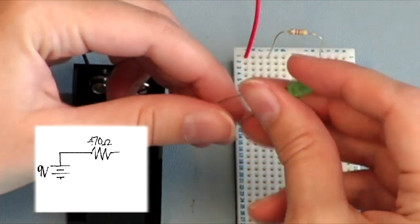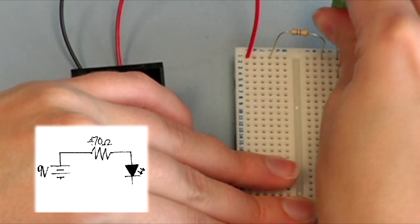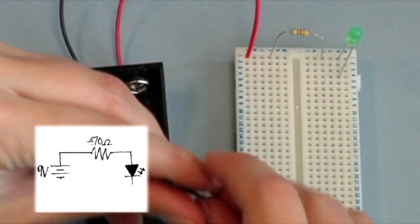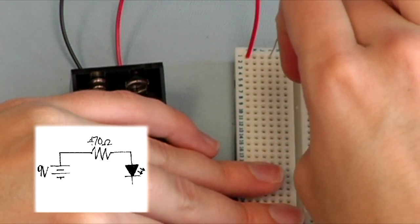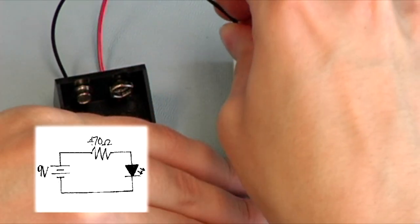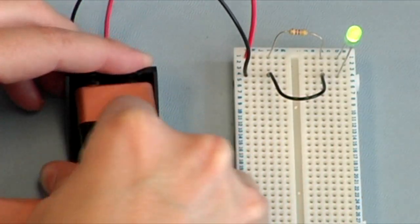The other end of the resistor is then connected to the positive terminal of the LED. Then the negative terminal of the LED is connected to the negative terminal of the battery. Now when you plug in the battery, the light should come on.